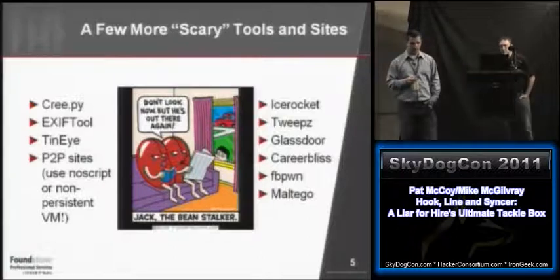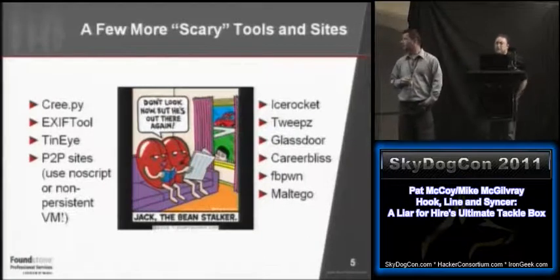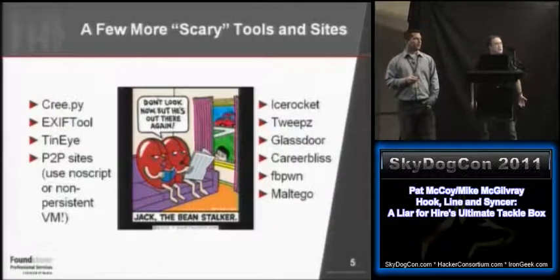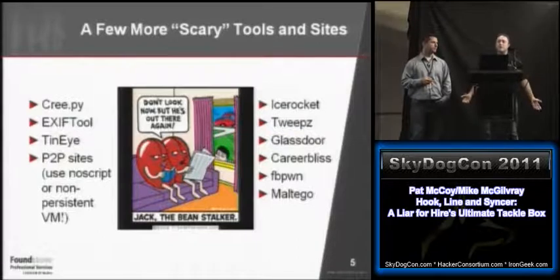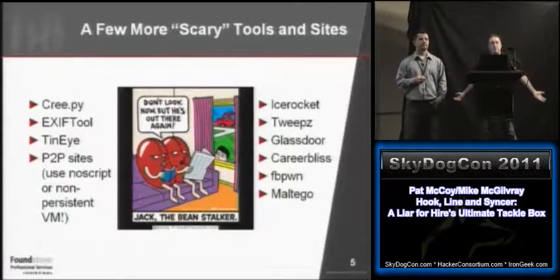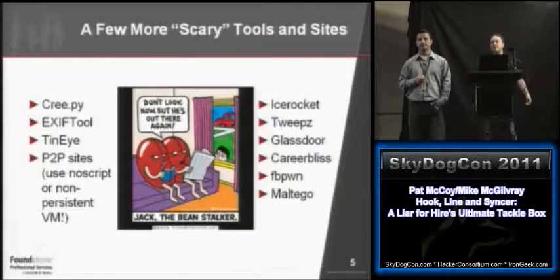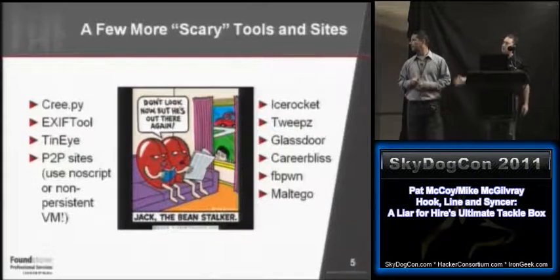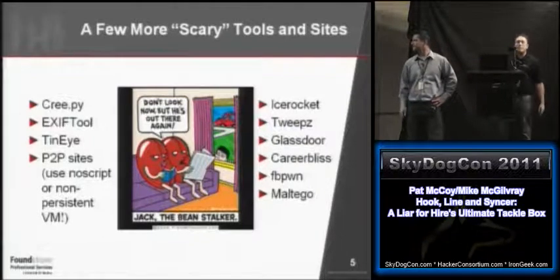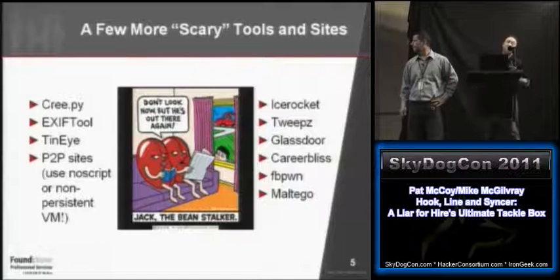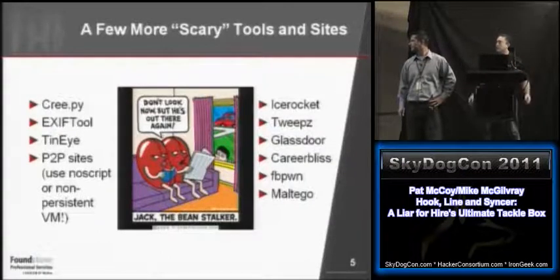Another tool you could use is Creepy. Creepy goes out and grabs geolocation information across social networking sites from people's pictures. You tell Creepy to go and grab photos of someone, and it can pull the EXIF data out of images they've been posting on sites like Twitter and Facebook, find out where they've been or where they are, get a good idea of where they live, where they hang out, what bars they like to go to. Exif Tool does something similar but it's more manual — you have to find all the images and look everything up manually. Creepy is an attempt to automate that.